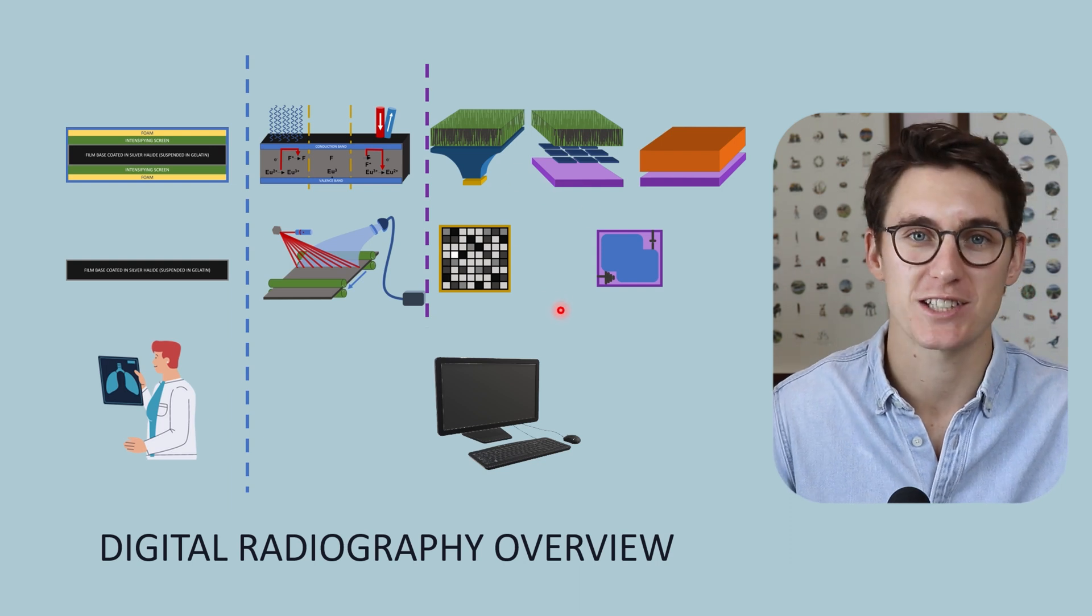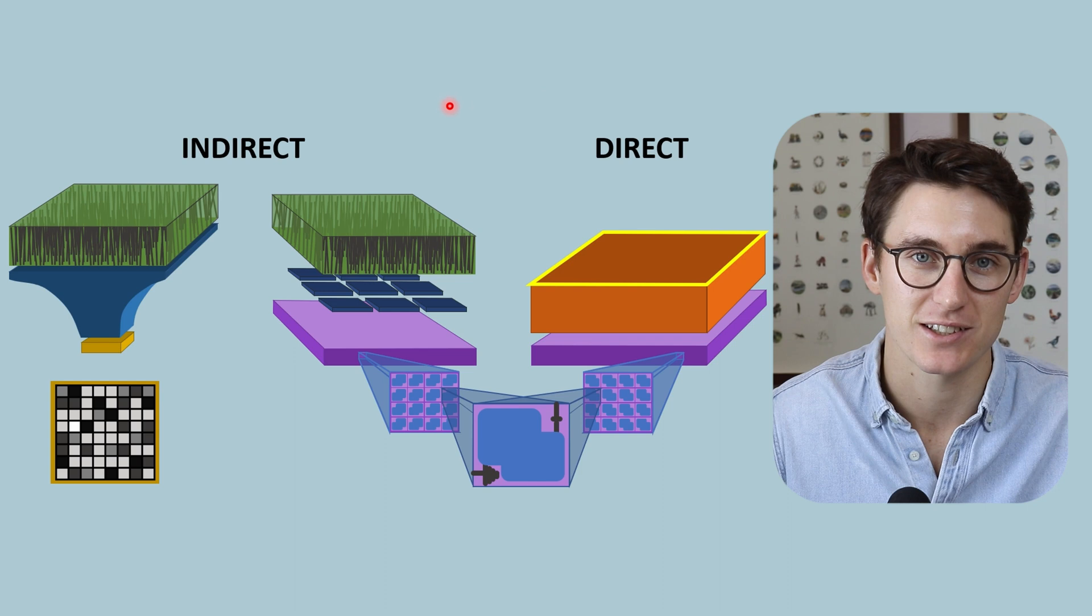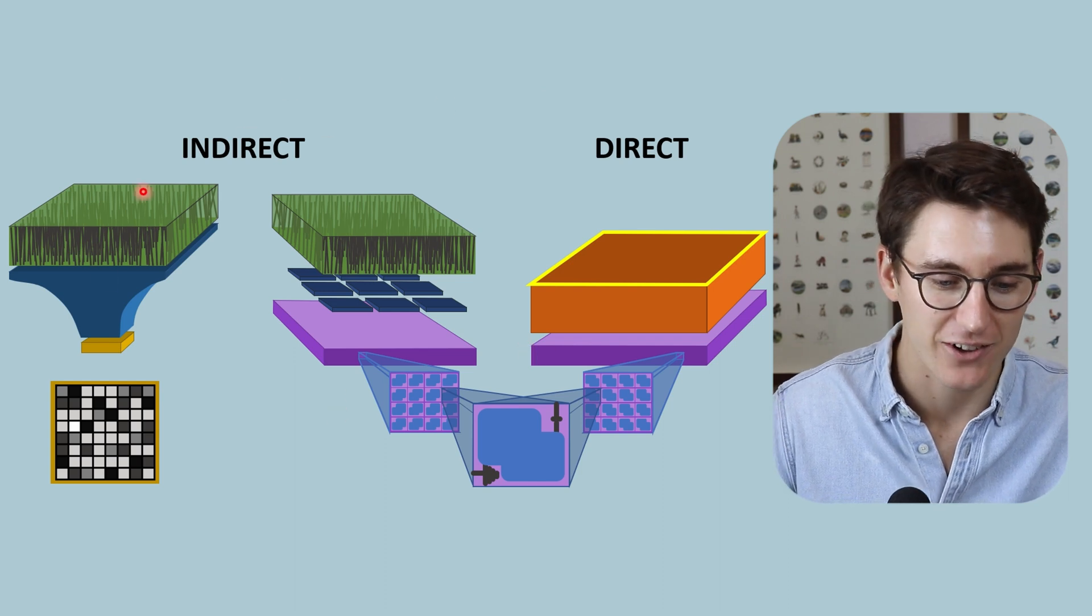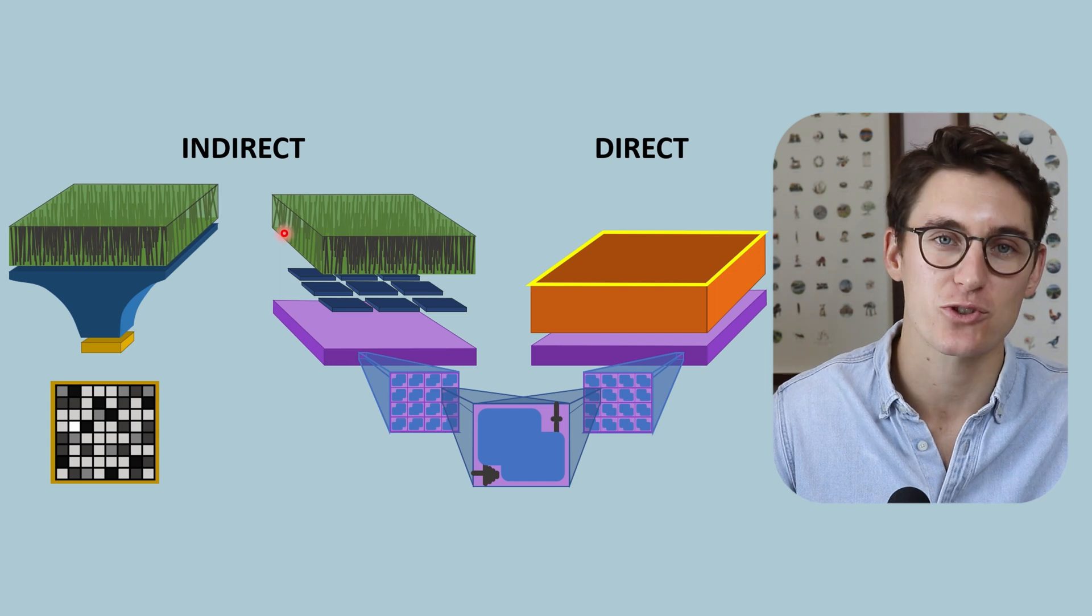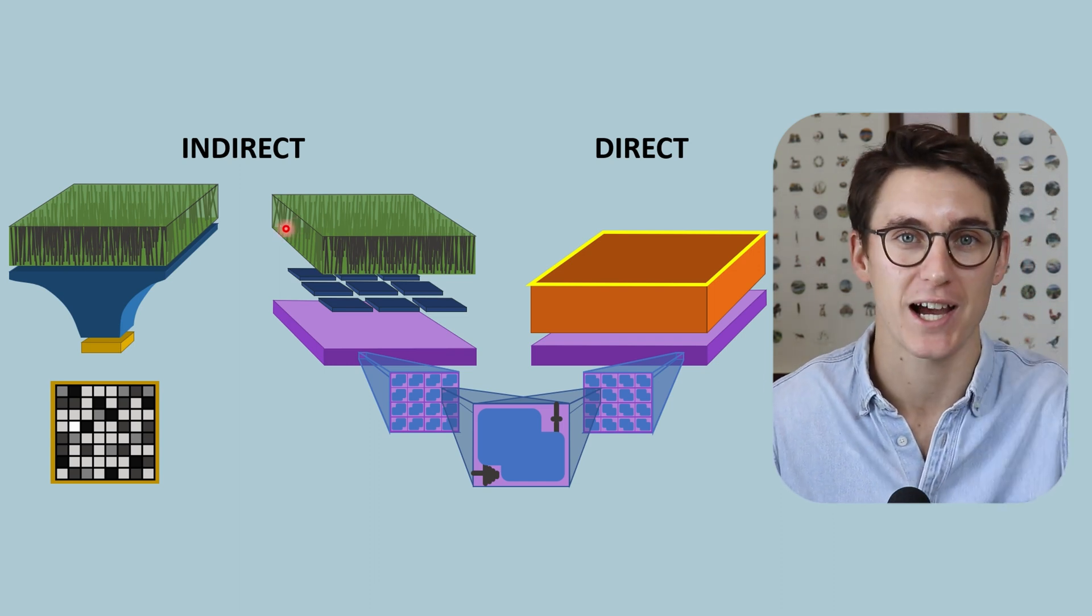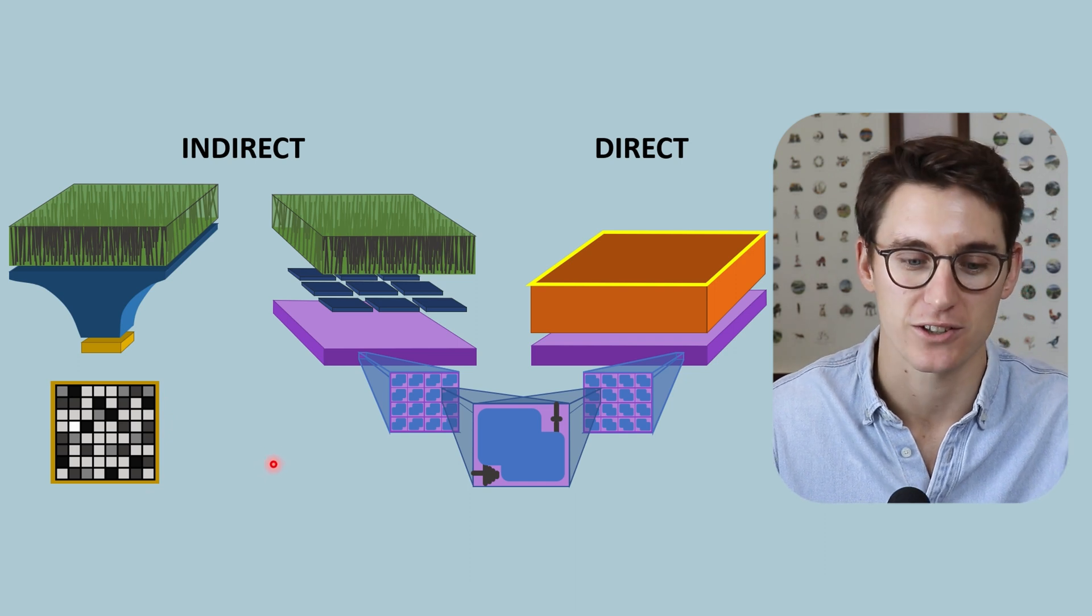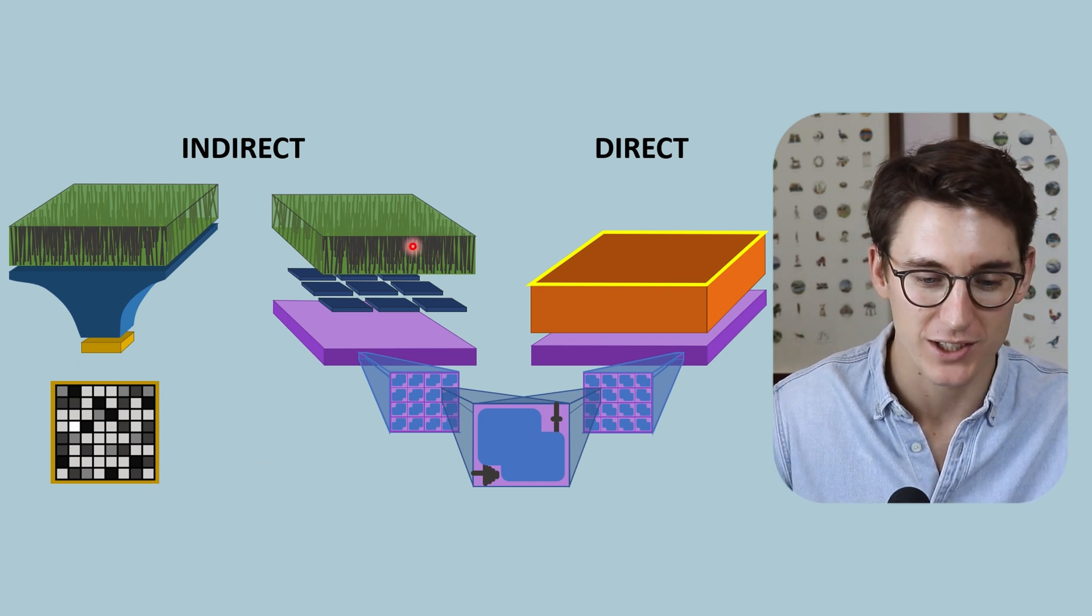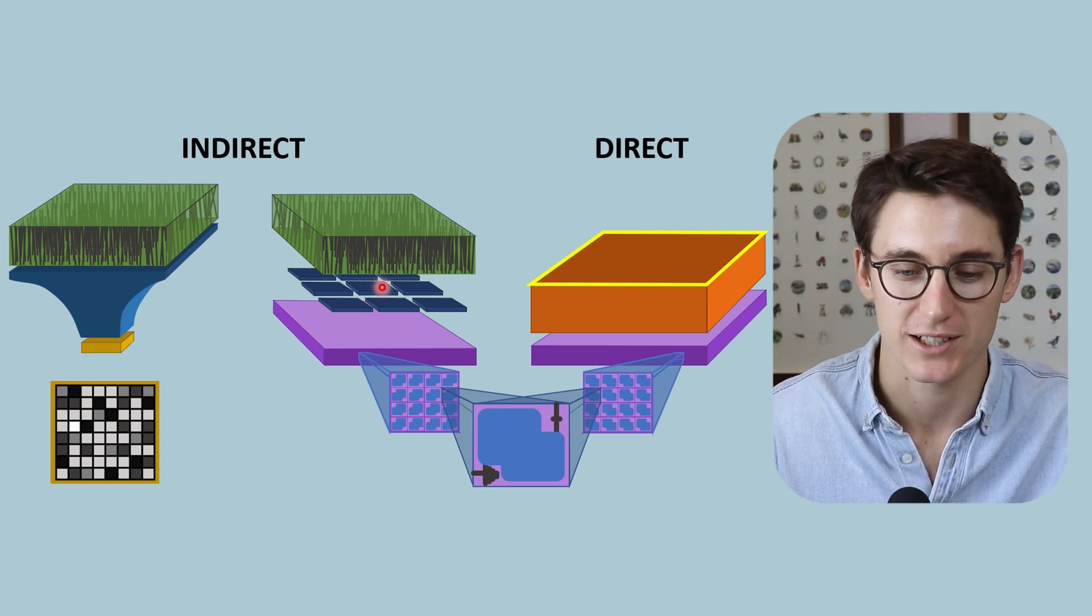Now our digital radiography systems can be further subdivided into indirect and direct digital systems. In our indirect digital radiography systems, we require x-rays to first be converted to light prior to that light energy creating an electronic signal. So we need what is known as a scintillating layer. We need x-rays to be converted to light.